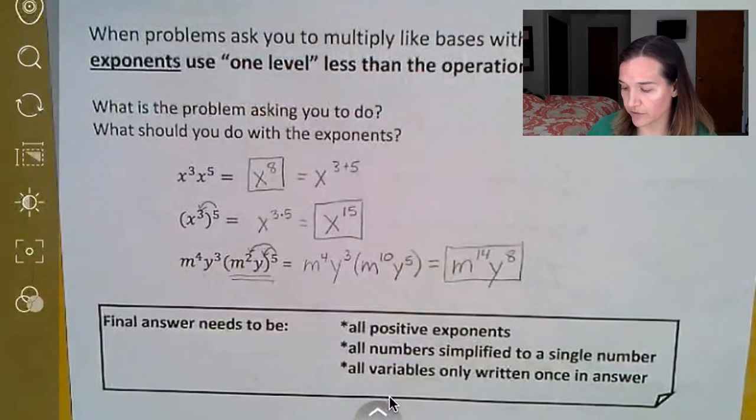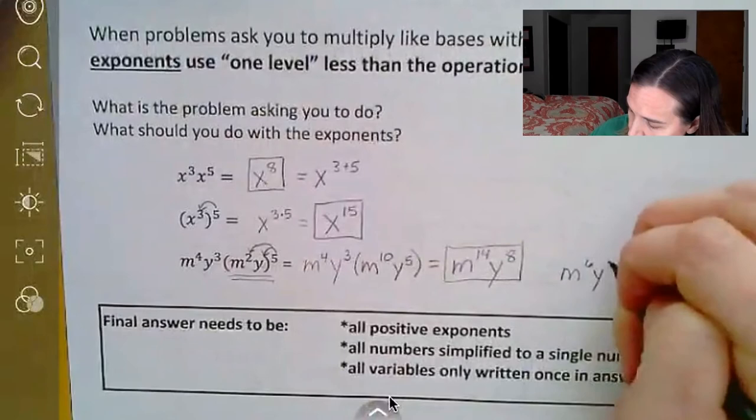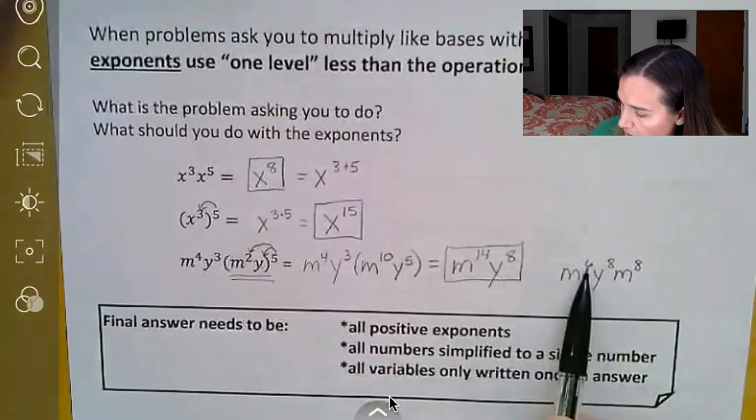With variables and exponents, you can't do that. So you just leave them as variables and exponents. And then all your variables are only written once in the answer. You can't have an answer like m to the sixth power, y to the eighth power, m to the eighth power.